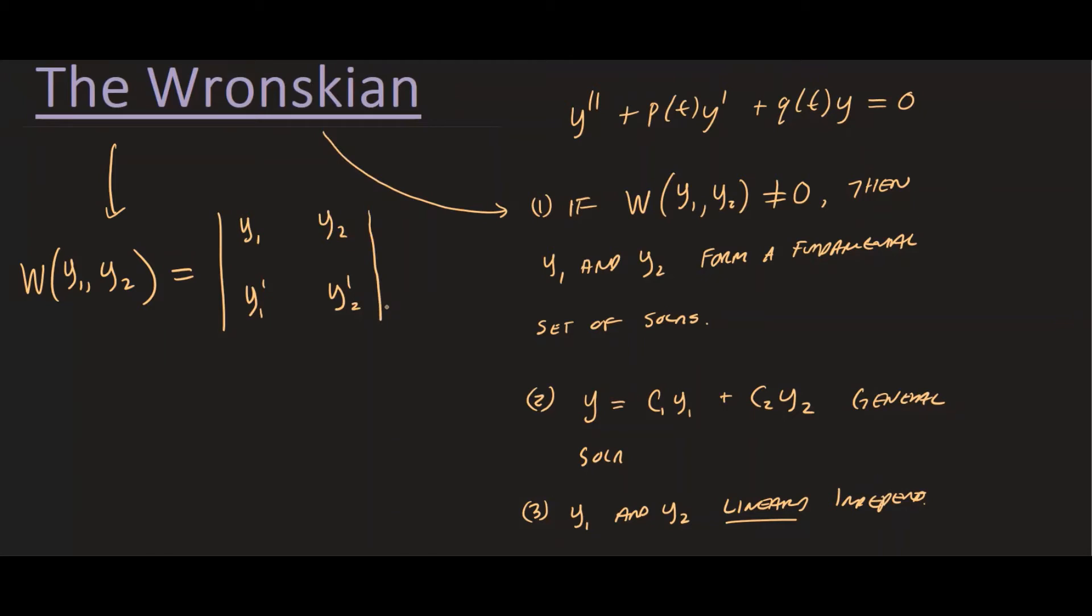And later on, you will see that from Abel's theorem, we would redefine Wronskian, which is also defined to be C*e^(-∫p(t)dt). So this is another way we can also define Wronskian, but this is by Abel's theorem. Okay, so having said that, let's just use this definition right here to find the Wronskian of the following differential equation.